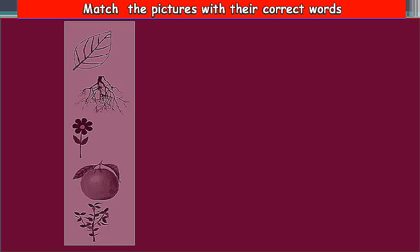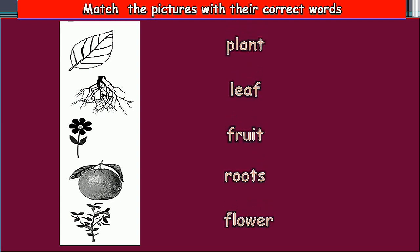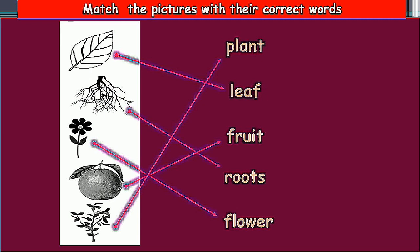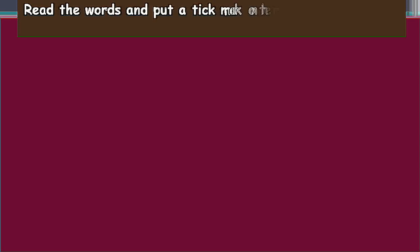Match the pictures with their correct words. Let's see what we know. The first one is very easy — that is leaf. Next, the third one is flower. Next one is fruit. Last one is plant. The remaining one is roots. Roots is one of the parts of a plant.